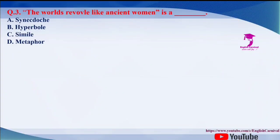Question number three: 'the world revolves like ancient women' is a dash. The options are A. Synecdoche, B. Hyperbole, C. Simile, and D. Metaphor. The correct answer of this third question is C, that is simile.